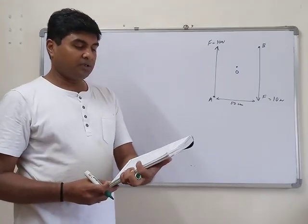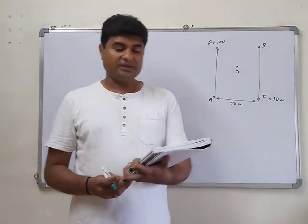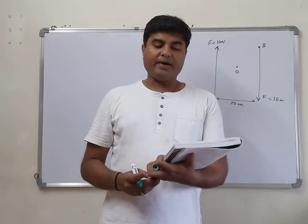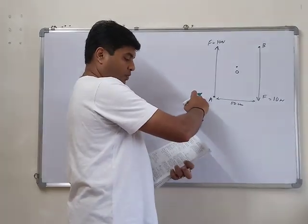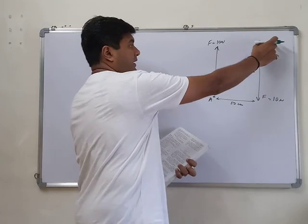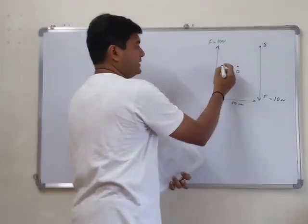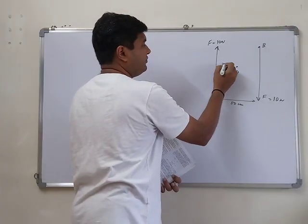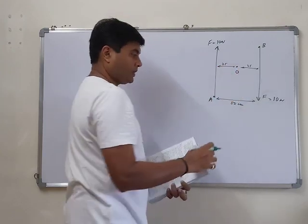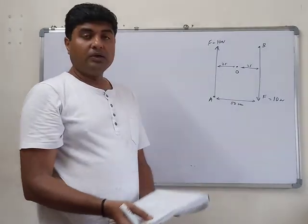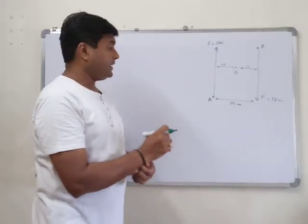You need to find: first, the moment of the two forces about point A; second, about point B; and third, about point O, which is situated in the middle — meaning 25 centimeters on each side.